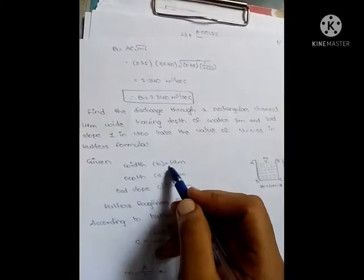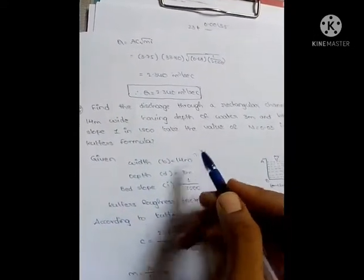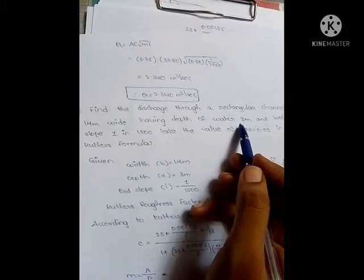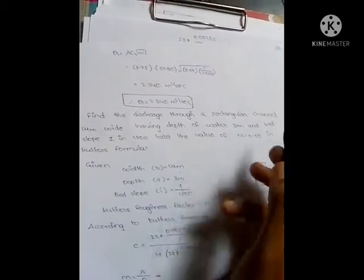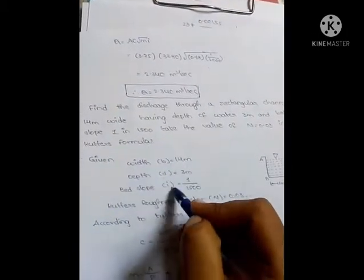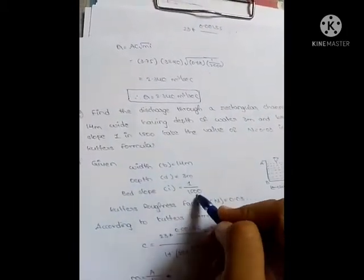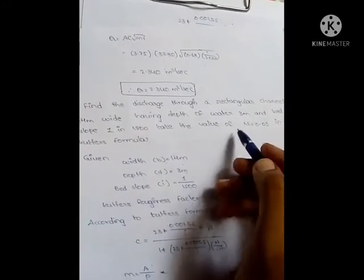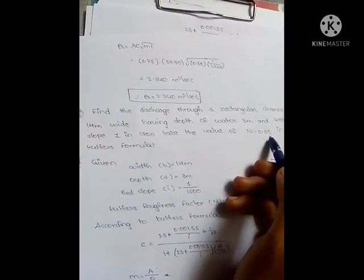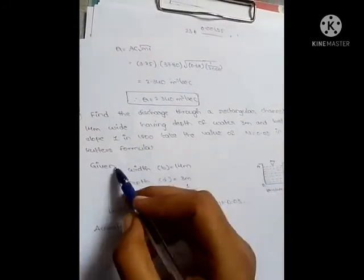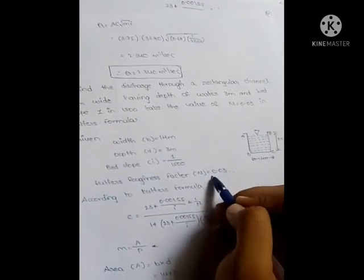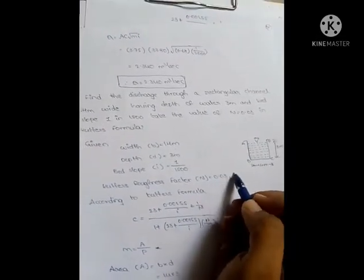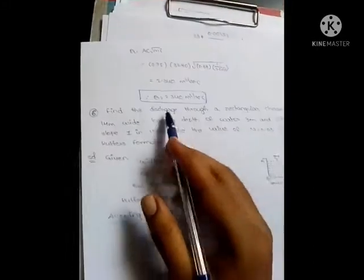Given data: width is equal to 14 meters, depth d equal to 3 meters, bed slope i equal to 1 by 1500, and Kutter's roughness factor n equals 0.03.